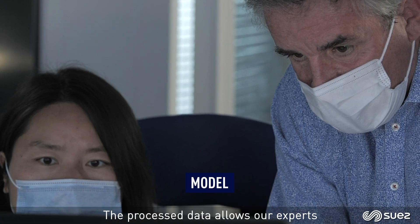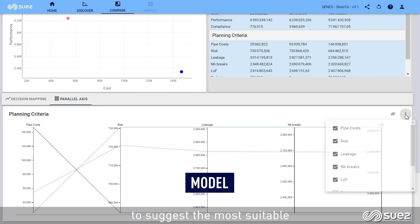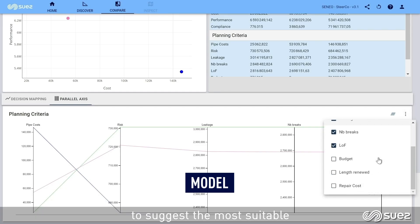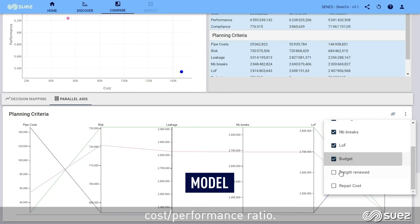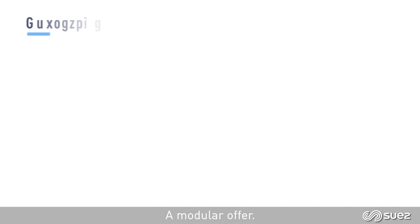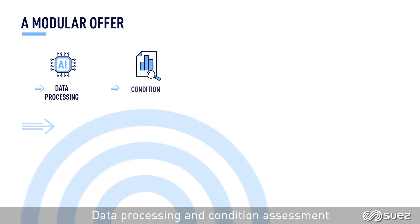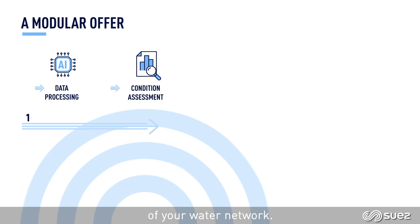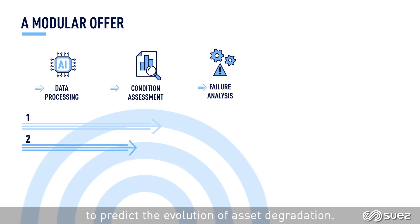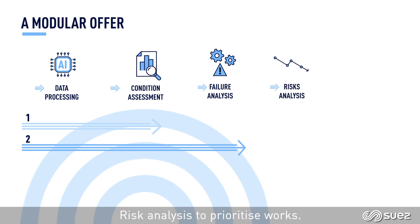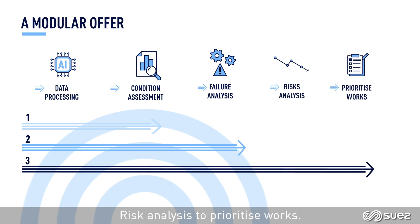The processed data allows our experts to suggest the most suitable cost-performance ratio. A modular offer covers data processing and condition assessment of your water network, failure analyses to predict the evolution of asset degradation, and risk analysis to prioritise works.